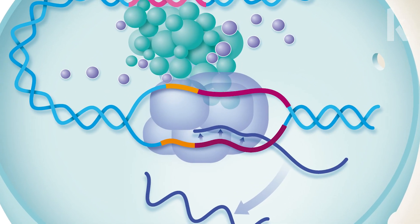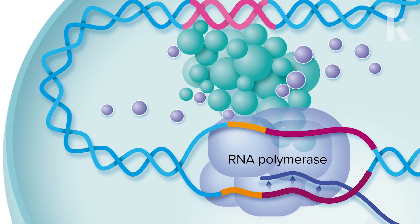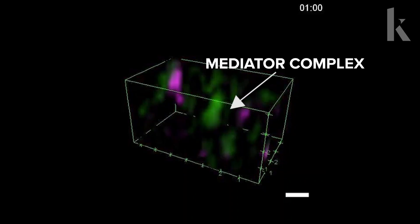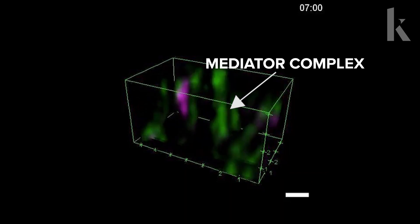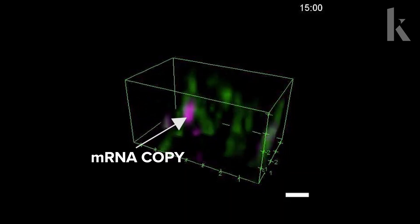Now the crucial molecular workhorse called RNA polymerase can come in and copy the gene. The RNA polymerase has a team of helpers called the mediator complex—that's these green proteins. They gather around the RNA polymerases and help them make mRNA copies. That's the pink you see here.